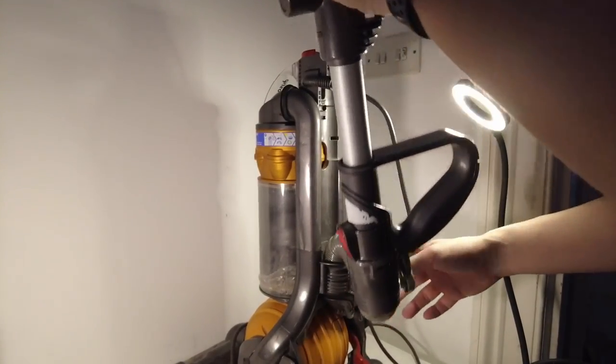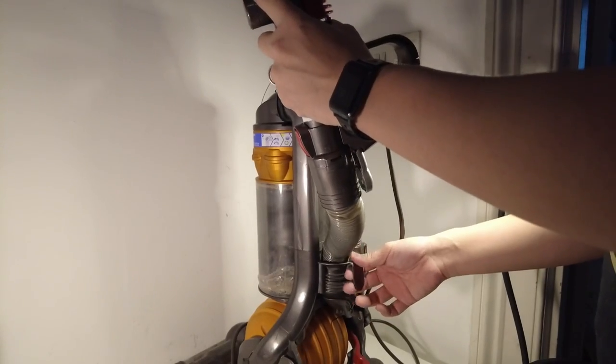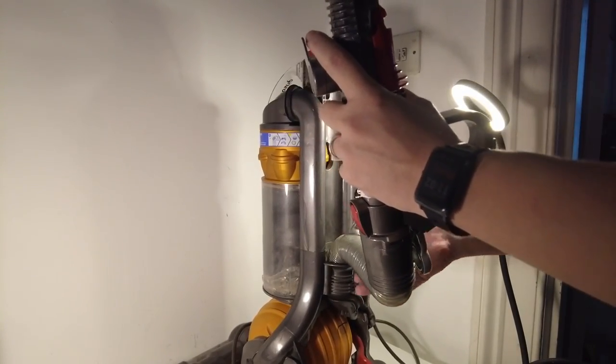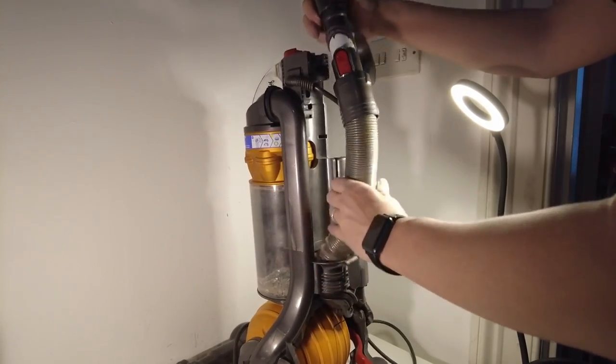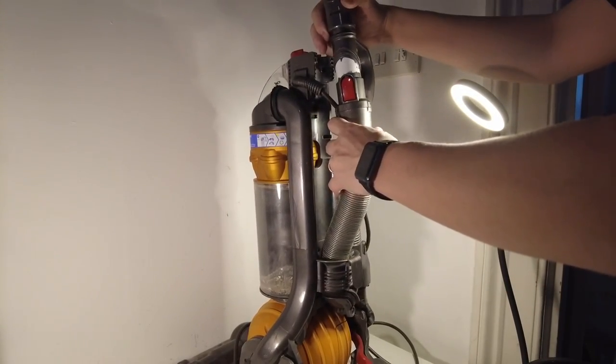So for whatever reason that has really enabled suction back onto this vacuum cleaner. I'm not exactly sure why because there weren't any obstructions but it could be the process of just unkinking this whole thing and putting it back together has really helped.